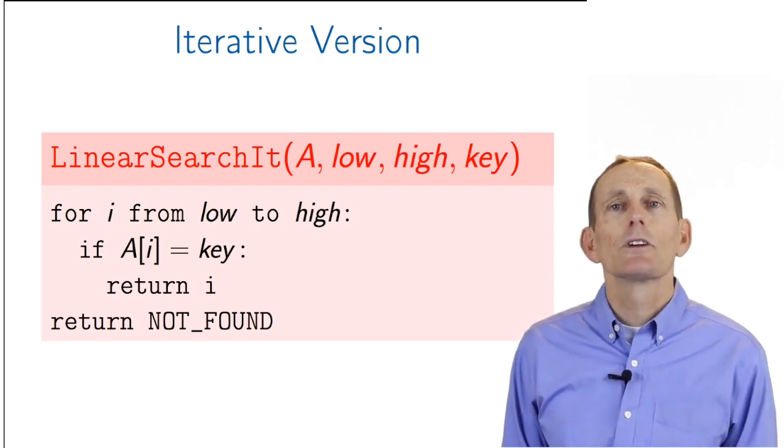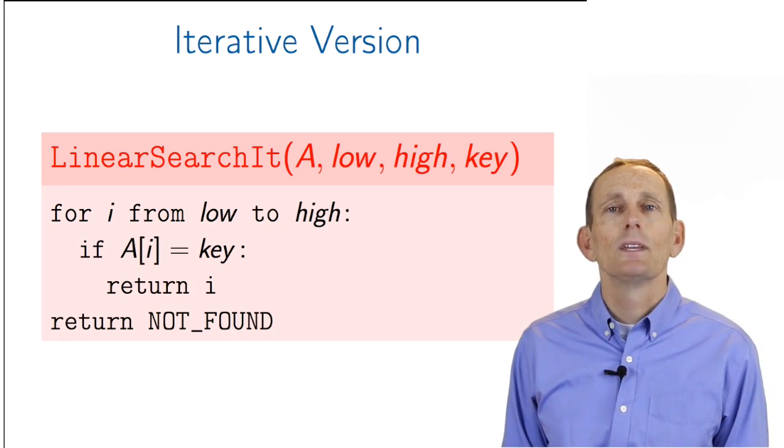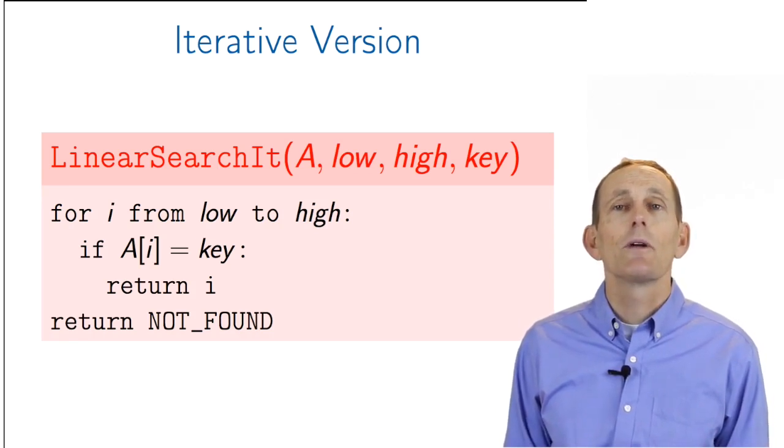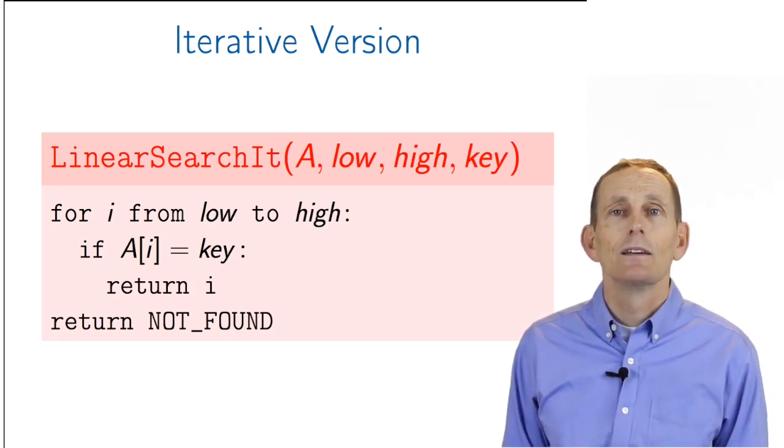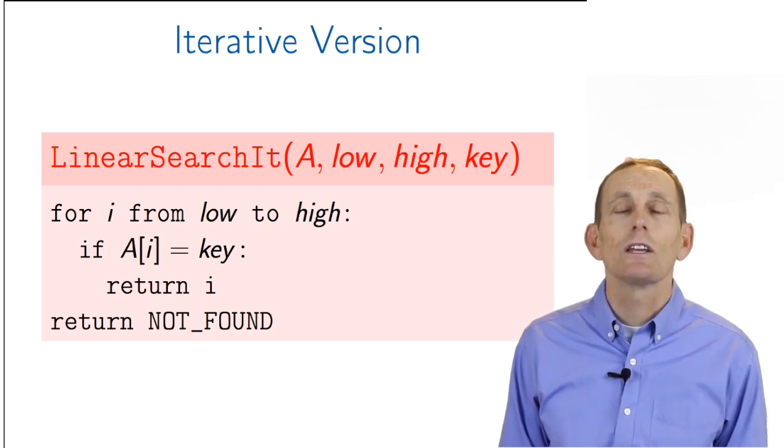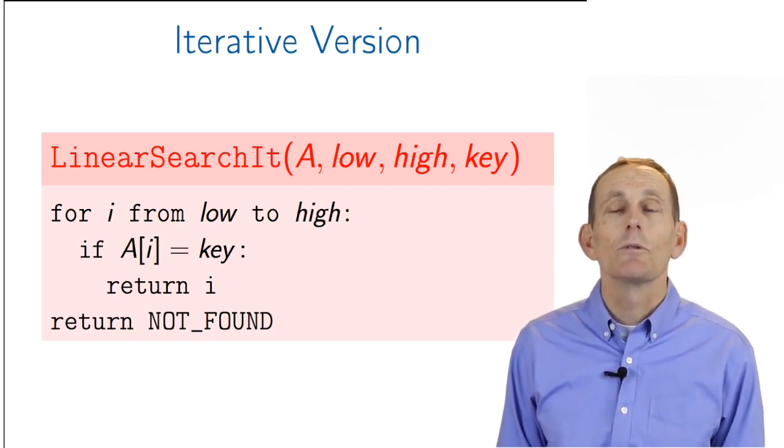Many times a recursive algorithm is translated into an iterative one. Here we've done that for the linear search. We search through the elements of array A from index low to index high. If we find a match, we return the associated index. If not, we return not found.